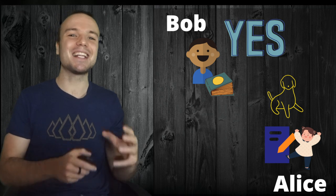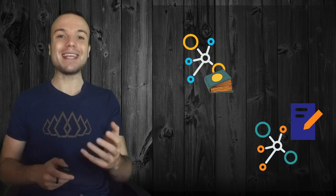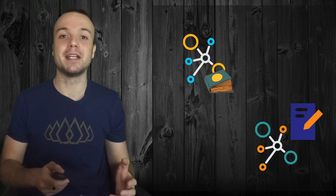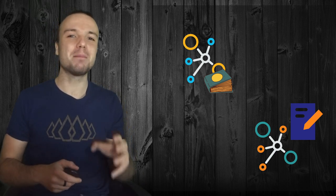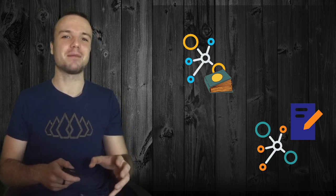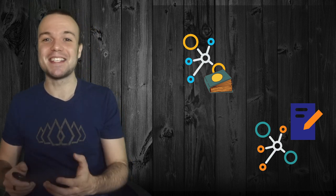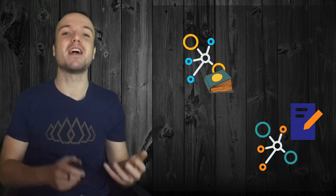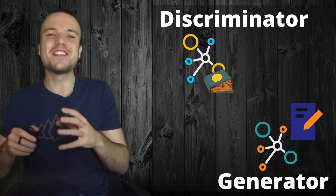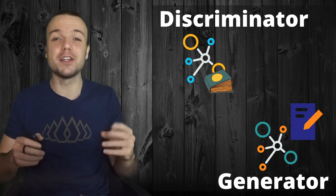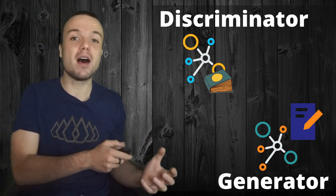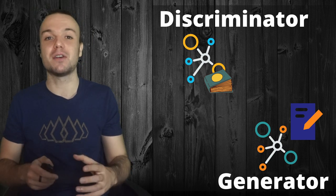Now this is exactly how GANs work, where instead of two kids, you have two neural networks. If you're not familiar with neural networks or machine learning in general, I suggest you check my introduction to machine learning. The model that draws new examples — or in our case Alice — is called a generator, while the model that decides whether they look real enough — which in our case was Bob — is called a discriminator.